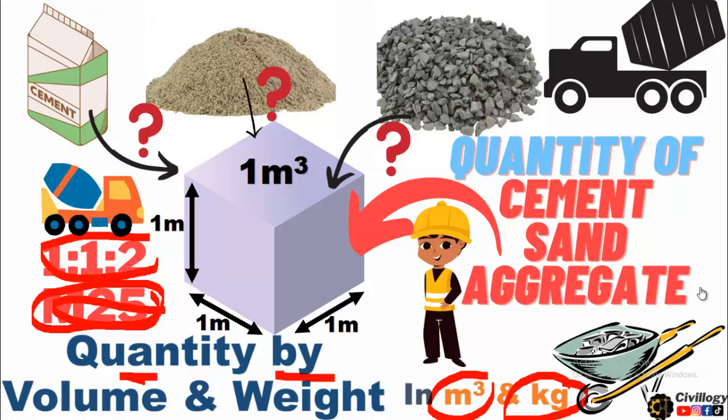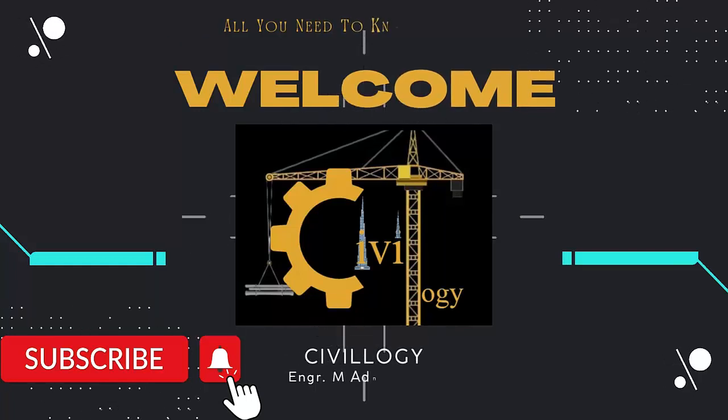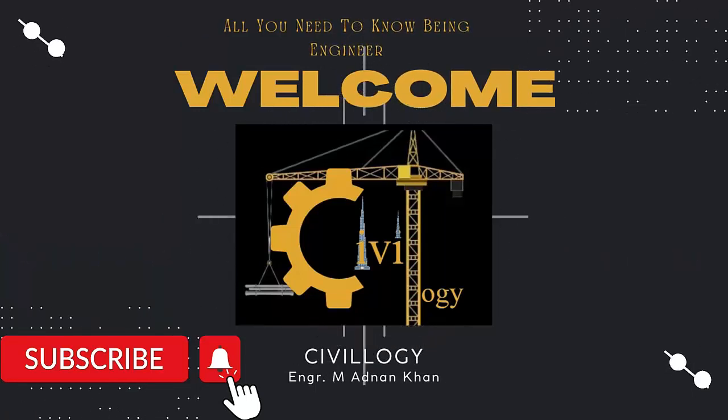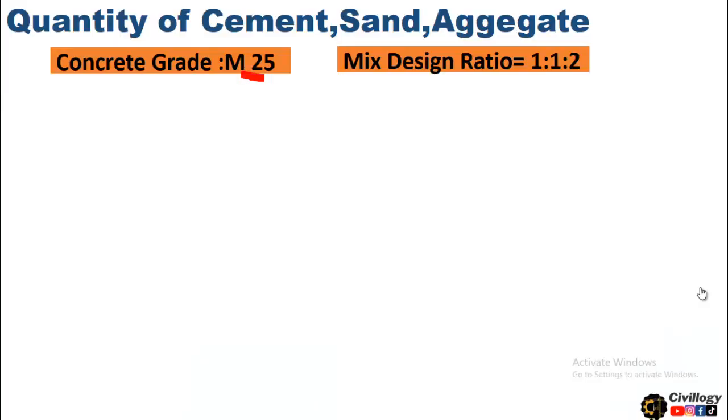Before we start, in my previous videos we calculated the same values and followed the same procedure for different grades of concrete — M5, M7.5, M10, and M20 grade. The links to those videos are given in the description; please also watch those videos to get a better understanding of the topic.